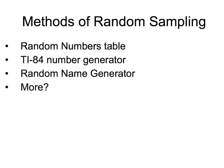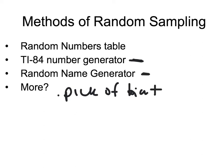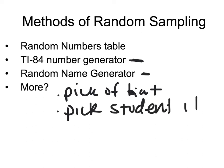Methods of random sampling include a random numbers table, which can be demonstrated in class. There's also a function on your TI-84 that generates random numbers, and applications where you put names in and it generates a name for you. You can also pick out of a hat or select by student IDs. There are many methods, but the key is that everybody gets an equal chance of being asked.